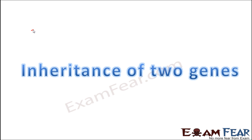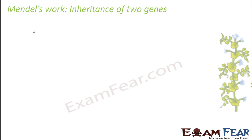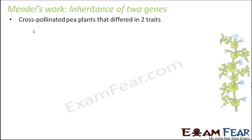But now we will consider two genes — basically two traits. We will see how we try to cross two parents which differ in two traits. Mendel performed a series of experiments with the same pea plant to study the inheritance of two genes. He cross-pollinated pea plants that differed in two traits, and this type of cross was known as a dihybrid cross.